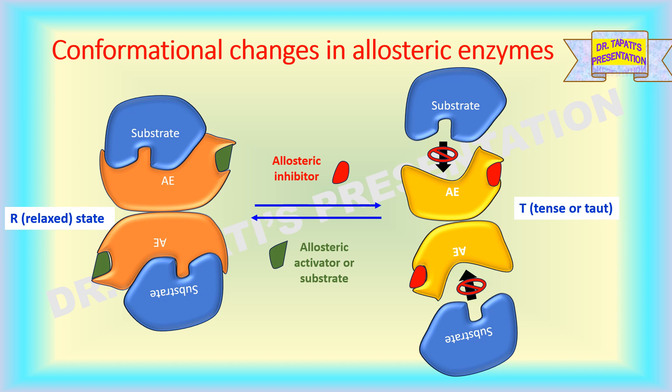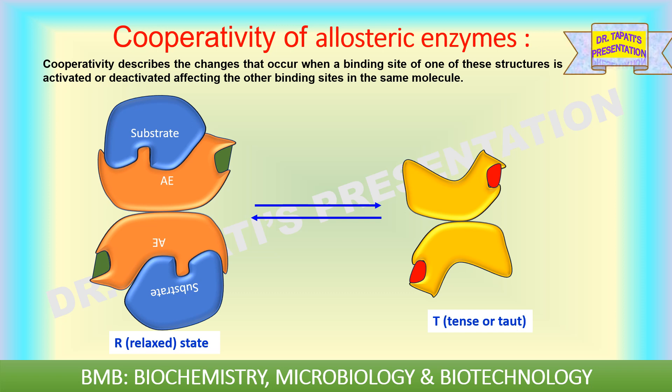In the presence of substrate or a positive modulator or activator, the enzyme is in a catalytically more active conformation known as the relaxed state or R state. In the presence of a negative modulator or inhibitor, the enzyme is in a less active conformation known as the T state. The concentration of enzyme molecules in the R state increases as more substrate is added. Therefore, the binding of substrate to the allosteric enzyme is said to be cooperative, and this cooperativity occurs when an enzyme contains multiple binding sites.